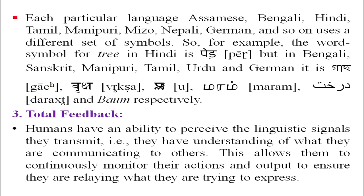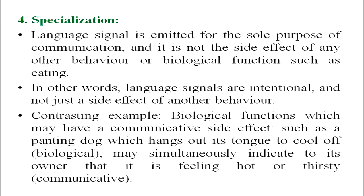The third feature is total feedback — humans have the ability to perceive the linguistic signals they transmit, meaning they understand what they are communicating. This allows them to continuously monitor their output to ensure they are relaying what they intend to express. The fourth feature is specialization — the language signal is emitted solely for communication and is not a side effect of any other biological function such as eating.